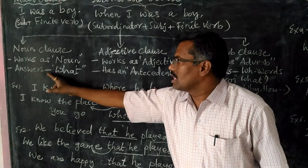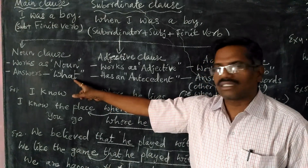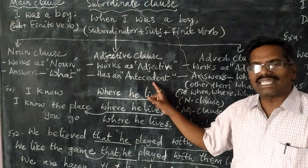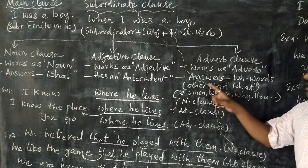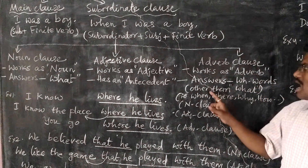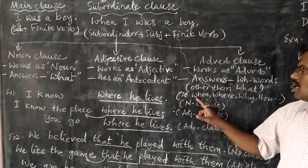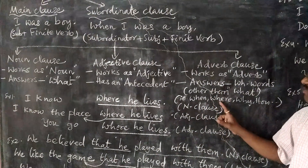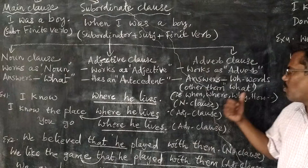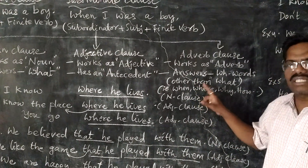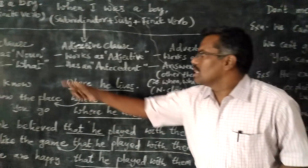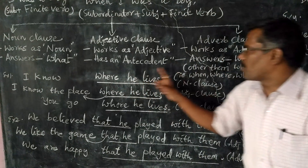What are the clues? First, noun clause answers the question word 'what.' Second, adjective clause has an antecedent before the clause. Third, adverb clause answers WH words other than 'what' — that means it may answer when, where, why, how. But it doesn't answer 'what.' So whenever a clause answers WH words other than 'what,' then it is called adverb clause.